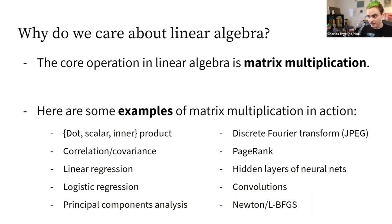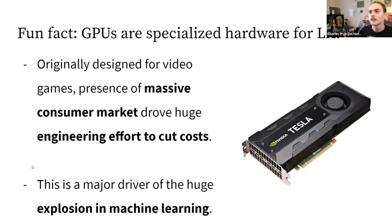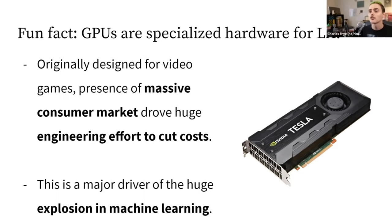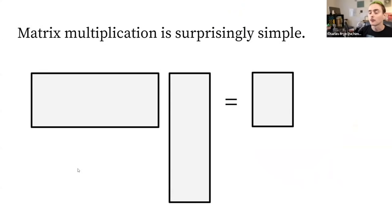Second-order optimization methods like Newton and L-BFGS also rely on matrix multiplication — it's essentially the operation at the core of every single one of these examples. GPUs, graphics processing units, were a huge driver of the explosion in machine learning. Originally designed for video games, they also made machine learning faster because underneath it all, both graphics rendering and machine learning require linear algebra and matrix multiplication.